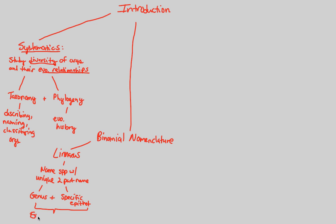An example we've already gone over is humans, classified as Homo sapiens. Homo is our genus and sapiens is our specific epithet. This actually roughly translates from Latin into 'the wise man.' In systematics, the species level and binomial nomenclature are the basic unit of study — just like the cell is the basic unit of life. The species is a good basic unit from which we build further evolutionary relationships and classify life altogether.